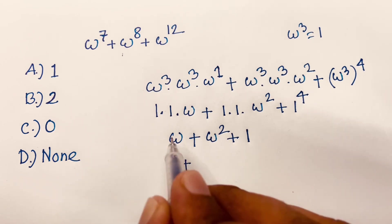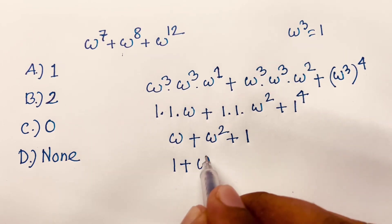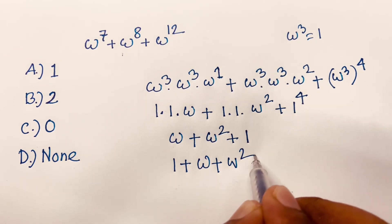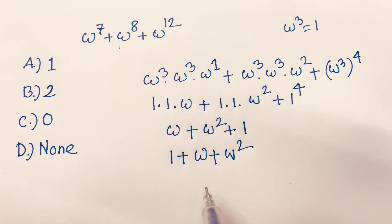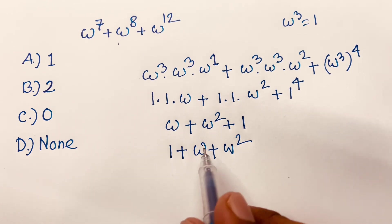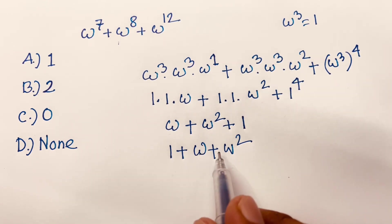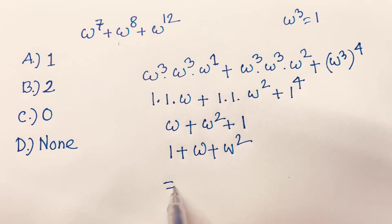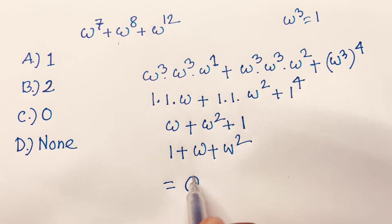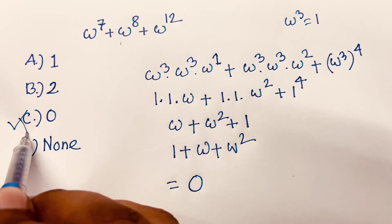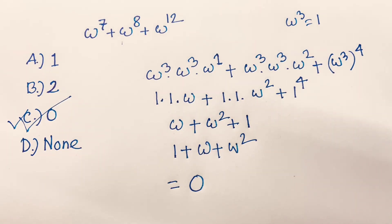So the full expression becomes 1 plus omega plus omega squared. We know the cube root of unity rule: 1 plus omega plus omega squared equals 0. So our final answer is option C, which is 0.